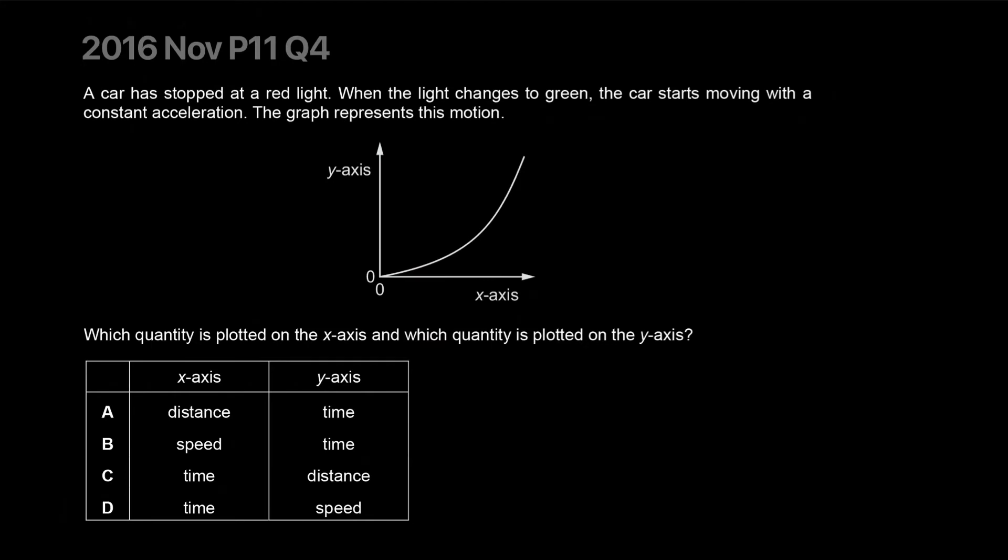A car has stopped at a red light. When the light changes to green, the car starts moving with constant acceleration. The graph represents this motion. Which quantity is plotted on the x-axis and which quantity is plotted on the y-axis?